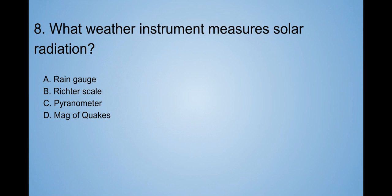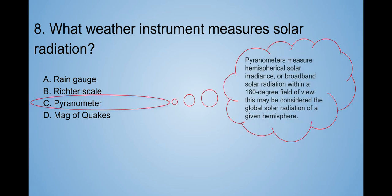Number eight. What weather instrument measures solar radiation? A. Rain gauge. B. Richter scale. C. Pyranometer. D. Mag earthquakes. That sounds funny. Ooh. It's C. Pyranometer.